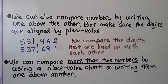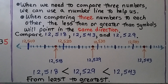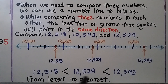We can compare more than two numbers by using a place value chart or writing them one above another. When we need to compare three numbers, we can use a number line to help us. And when comparing three numbers to each other, the less than or greater than symbols will point in the same direction.